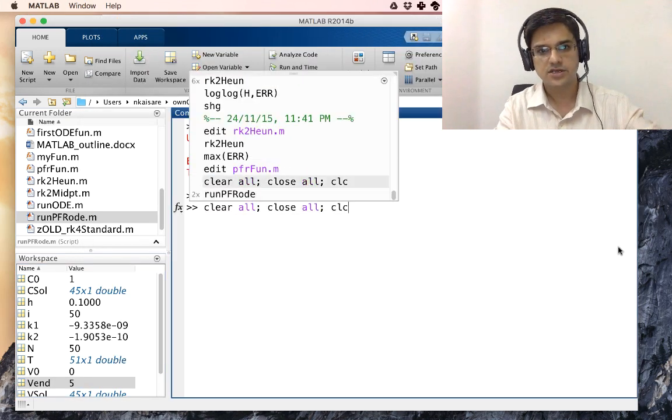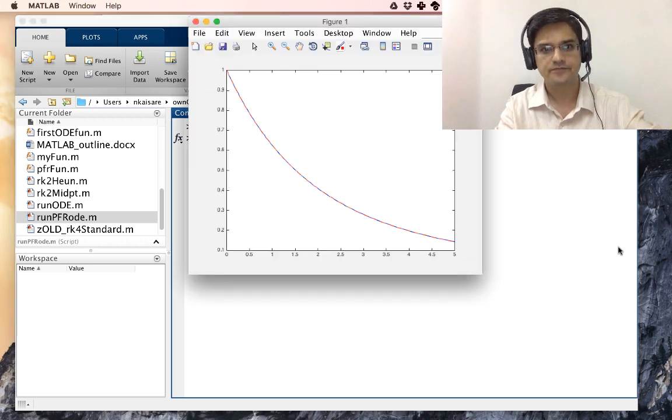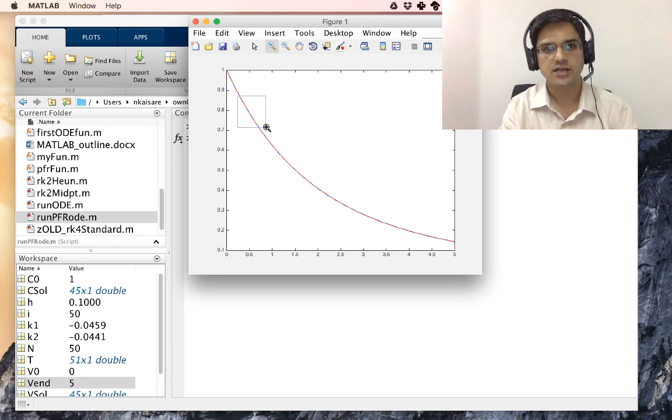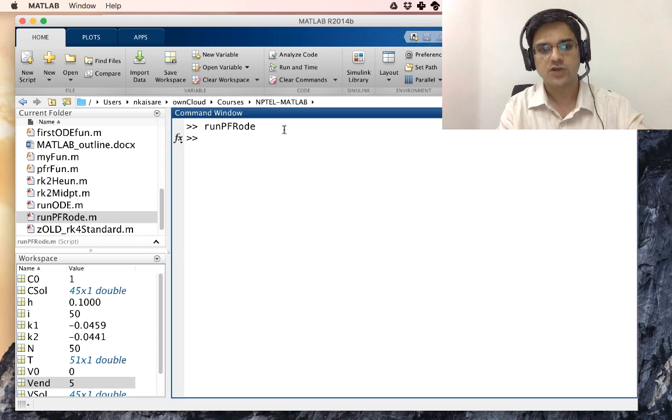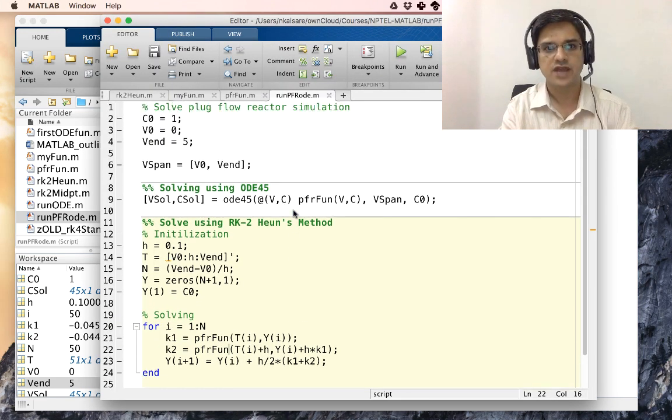Let us clear all, close all, and run the PFR code. And as you can see, the red dashed line lies exactly or almost exactly on top of the blue solid line. The red line is our Heun's method solver, whereas the blue line is our ODE 45 solver. So as you can see over here, this is the overall code that we have.